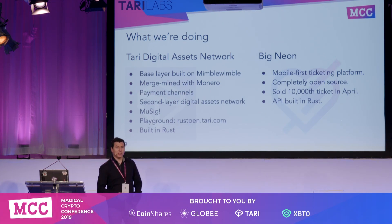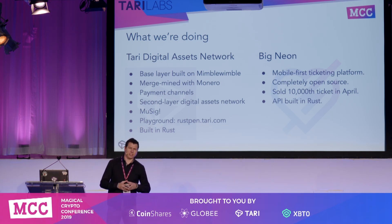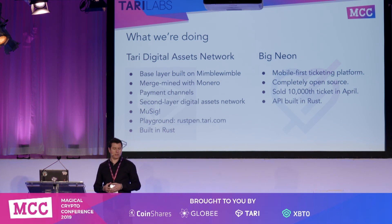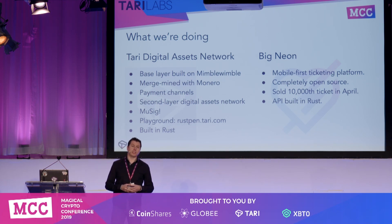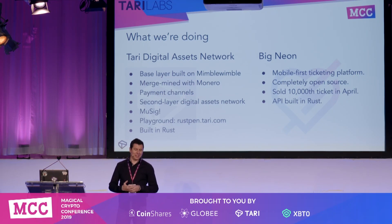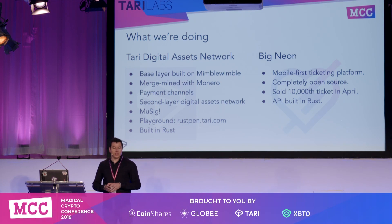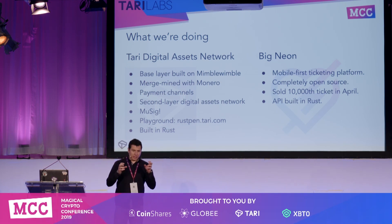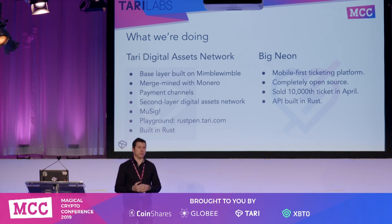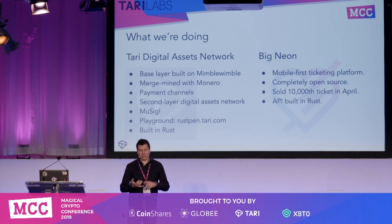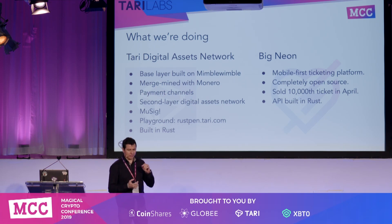What we are up to is two main projects at the moment. Firstly, we're focused on the Tari Digital Assets Network, which is a cryptocurrency coin based on Mimblewimble. The proof of work is merge-mined with Monero. We're doing some very interesting work on multi-party payment channels. Then, what we really want to do is have a second-layer digital assets network — a smart contract platform that allows you to create native digital assets: things like tickets, collectibles, loyalty points, that sort of thing.